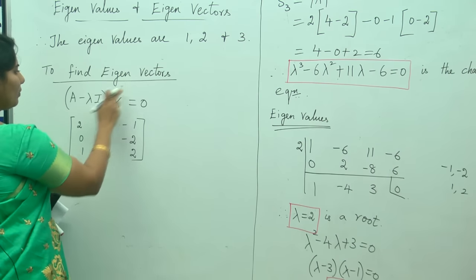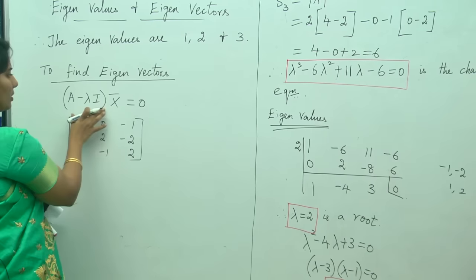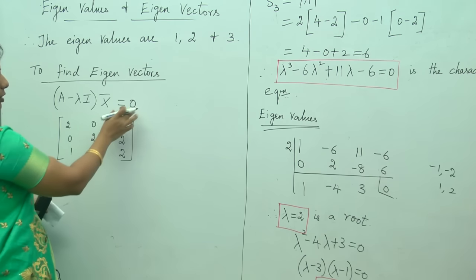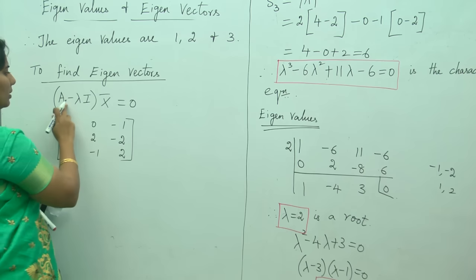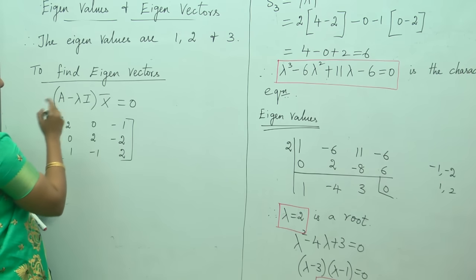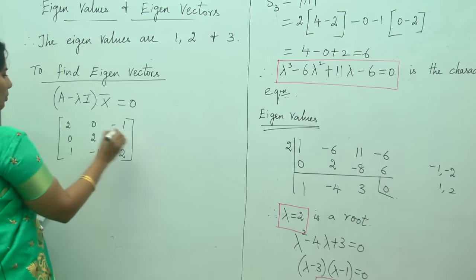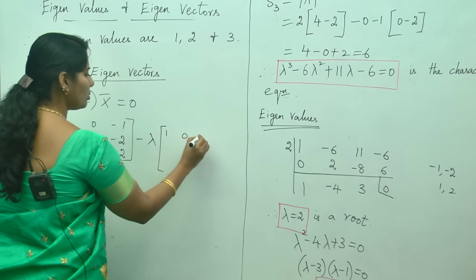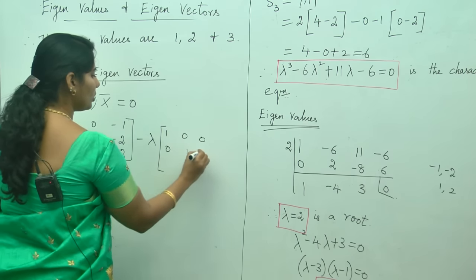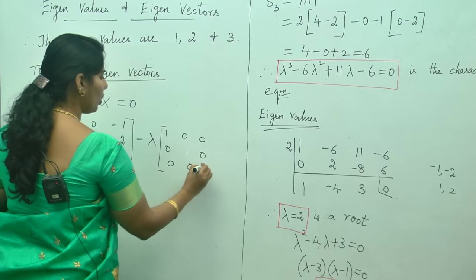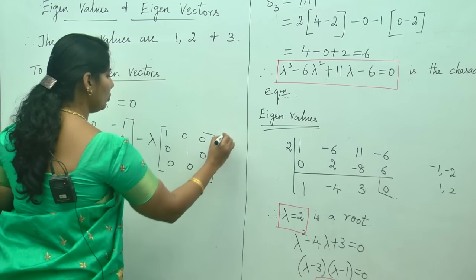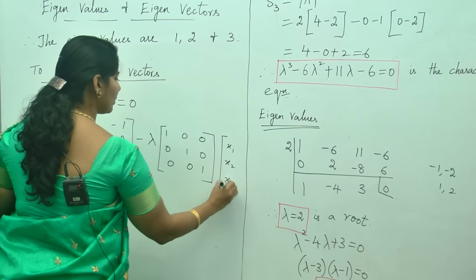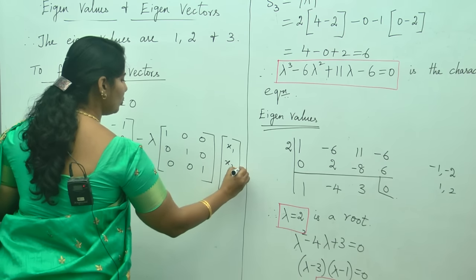To find the eigenvectors we need to satisfy the equation (A minus lambda I) times x-bar equals 0. This is the given matrix. In this we write A minus lambda I, where I is the unit matrix: [1 0 0 / 0 1 0 / 0 0 1], and x-bar is [x1, x2, x3], which equals 0.